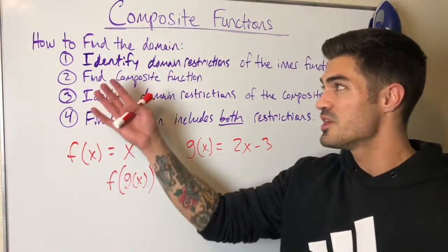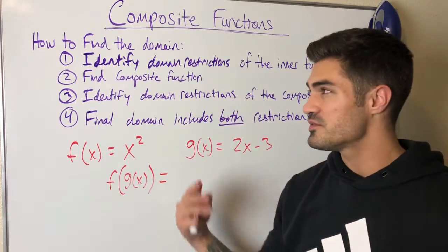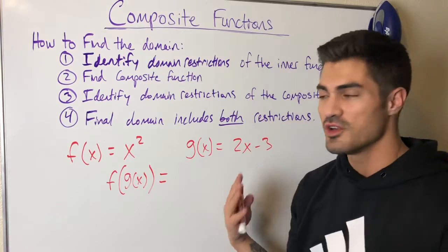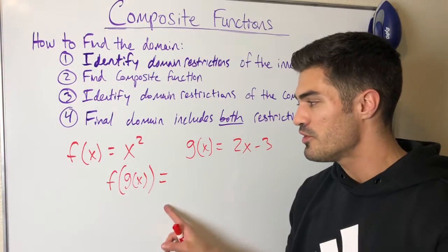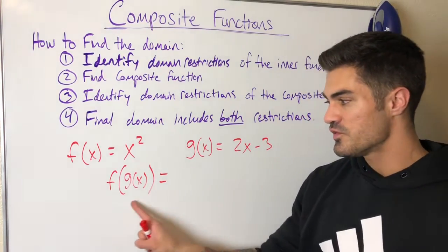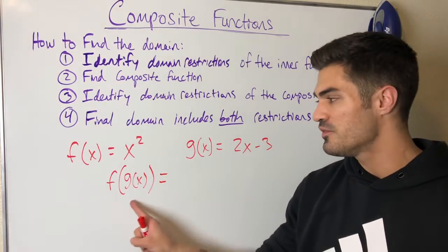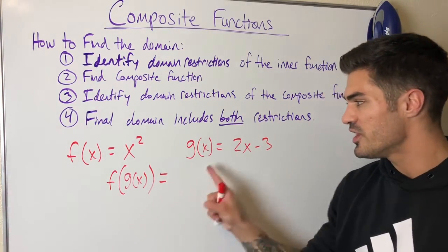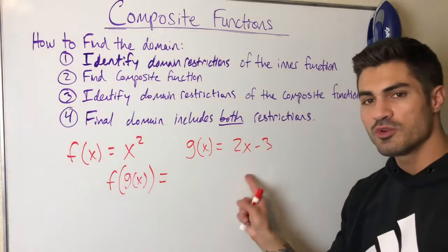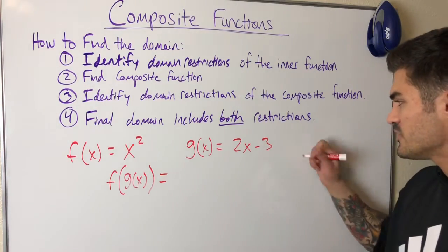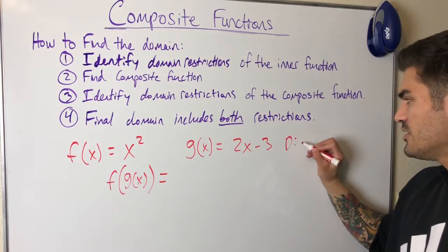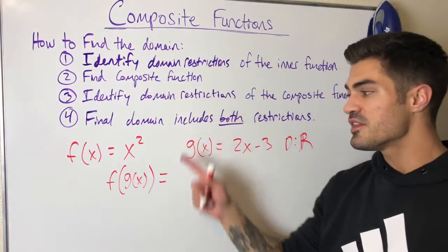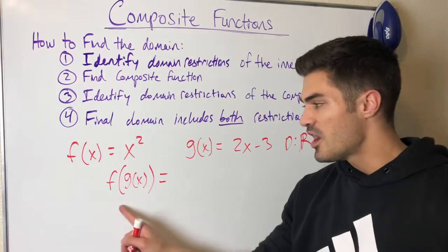Let's get into how to do this. First, how to find the domain of a composite function. Step one: identify domain restrictions of the inner function. Remember, composite functions have an outer function and an inner function, so first we look at the domain of our inner function. In this example, the domain of our inner function has no restrictions — the domain is all real numbers.